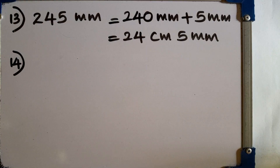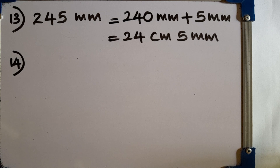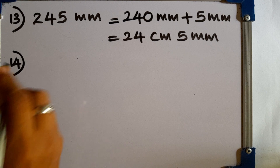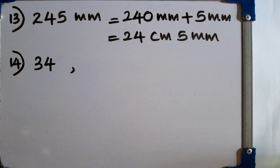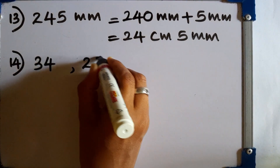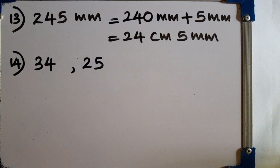Question number 14: when the number of olives Amal has is rounded off to the nearest 10, the result is 30. Write the maximum and minimum number of olives he could have. The maximum number can be 34 and the minimum can be 25.